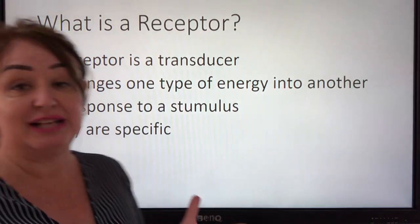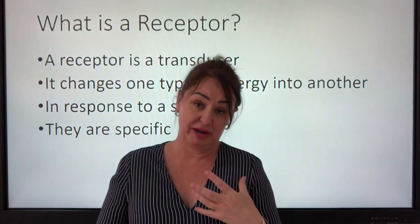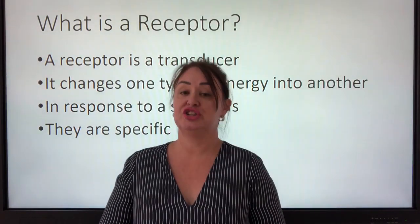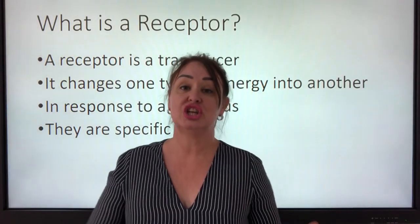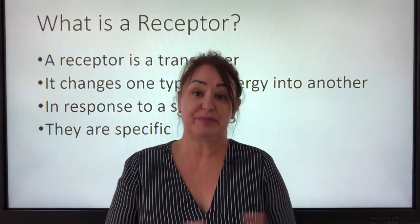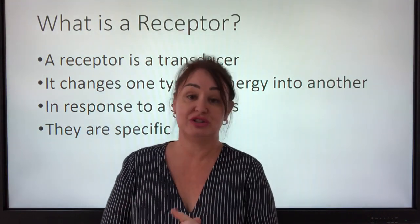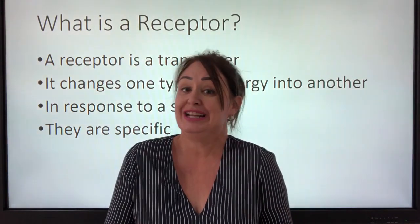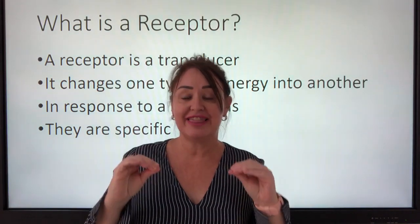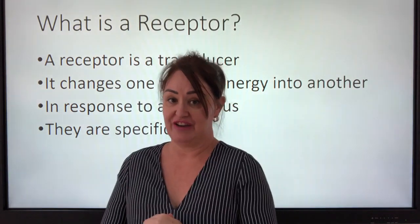What is a receptor? A receptor — you'll learn more when you move into the topic on the nervous system — is a transducer. It changes one type of energy into another type of energy. So a receptor is specific. It doesn't matter how much you shout at your eyes, they can't hear. It doesn't matter how much light you shine on your ears, they can't see. They are specific to that particular change in the environment.